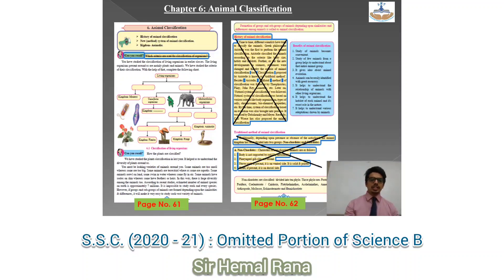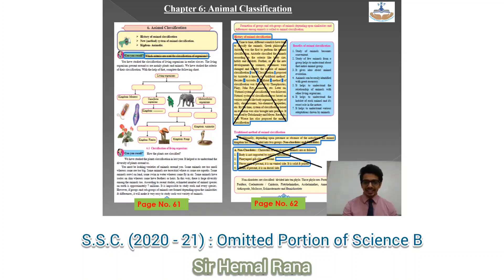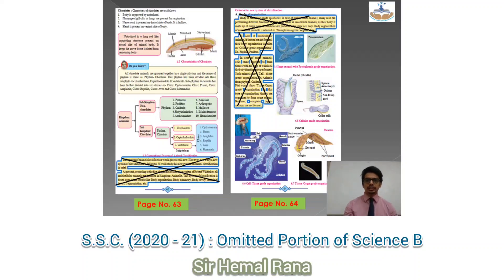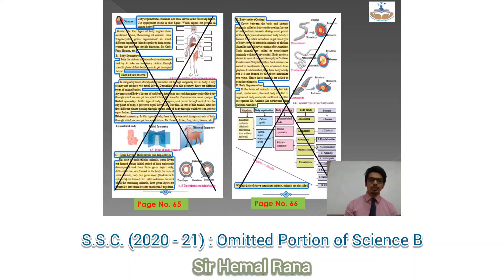Coming to Chapter 6, Animal Classification: you do not have 'Can You Recall.' On page 62 you do not have 'History of Animal Classification' — this part is removed — and then the traditional method has been removed. On page 63, the last two paragraphs have been removed, and on page 64 you do not have 'The Grade of Organization' — those three paragraphs have been removed.